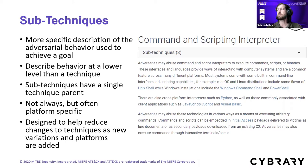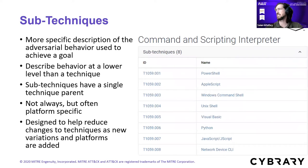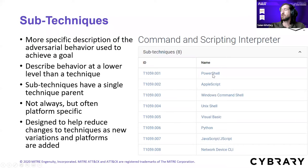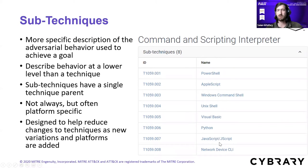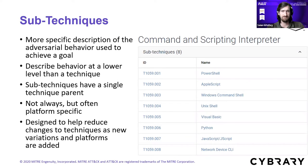Sub-techniques are designed to help reduce changes to techniques as new variations of platforms are added — they're intended to be fluctuating, so we might add them, consolidate them, or break them apart based on information that comes out. If you look at the sub-techniques for command and scripting interpreter, they have a T-number with the format of technique number dot sub-technique number, which is an incrementing value. PowerShell only applies to Windows, AppleScript only applies to iOS devices. As a defender, if someone said 'they're doing command and scripting interpreter on systems,' you wouldn't know what to look for — the sub-techniques give that specificity.